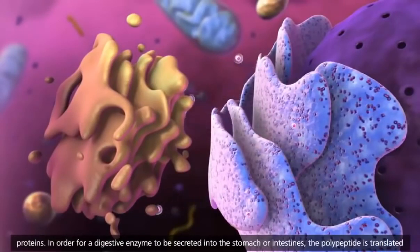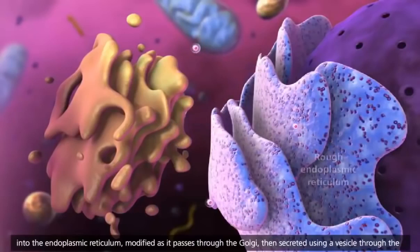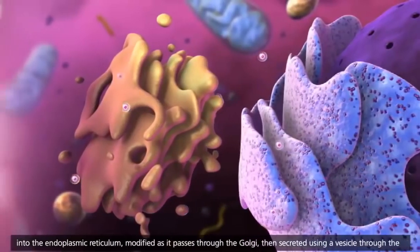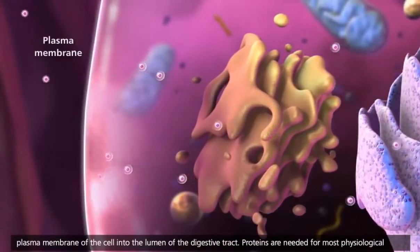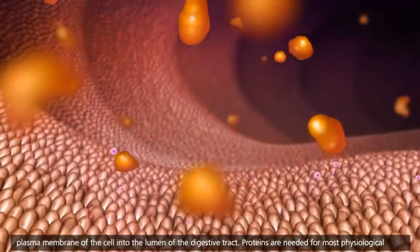In order for a digestive enzyme to be secreted into the stomach or intestines, the polypeptide is translated into the endoplasmic reticulum, modified as it passes through the Golgi, then secreted using a vesicle through the plasma membrane of the cell into the lumen of the digestive tract.